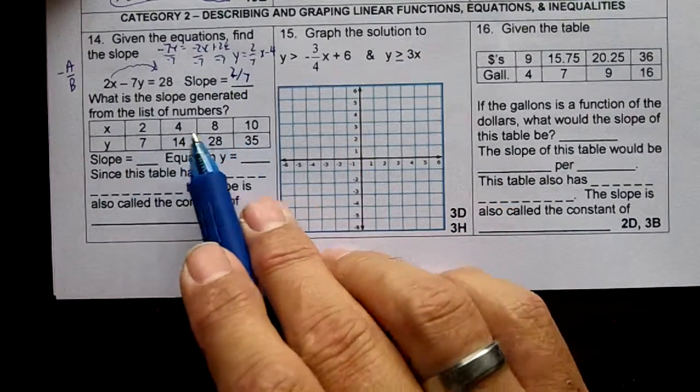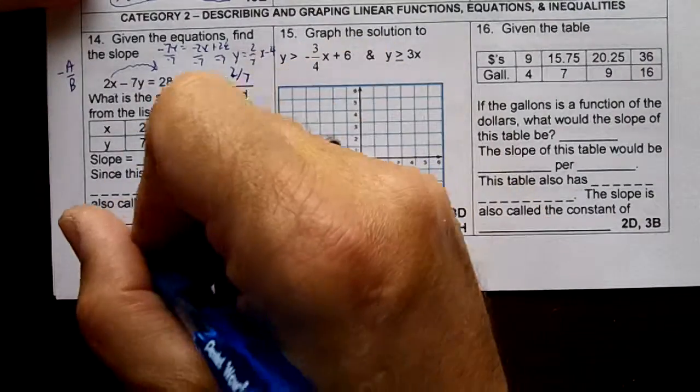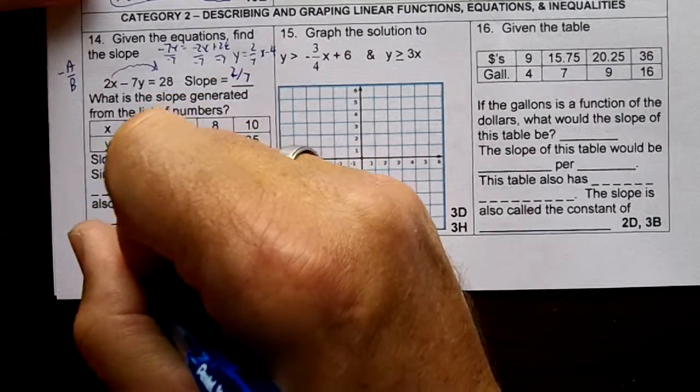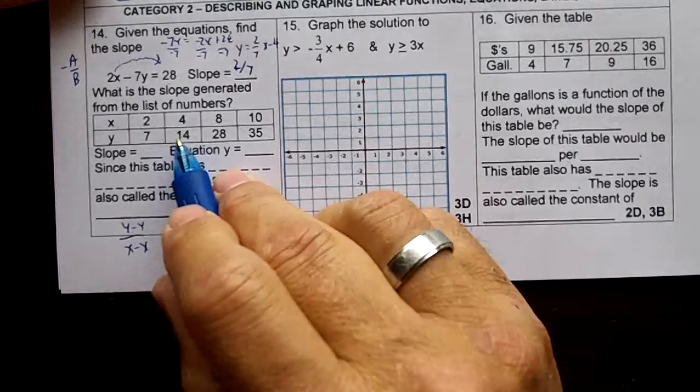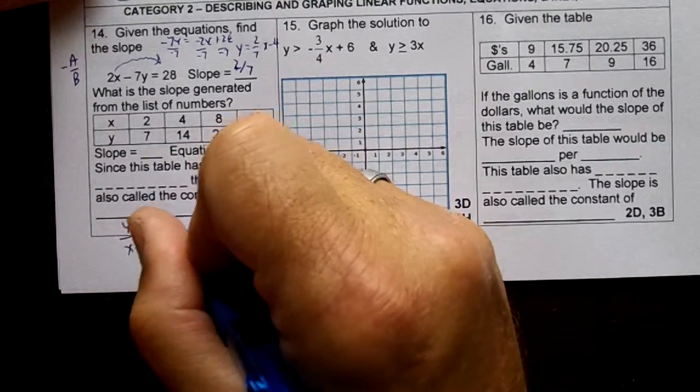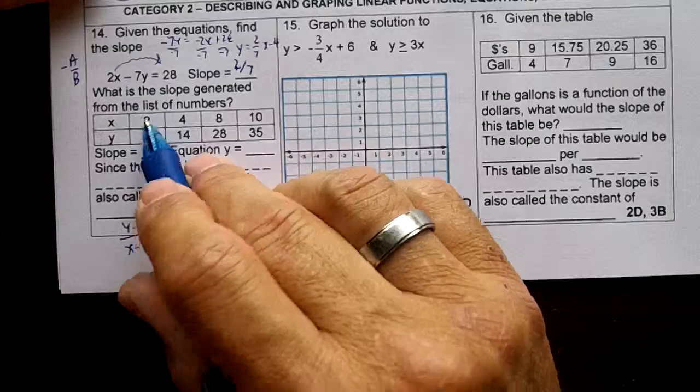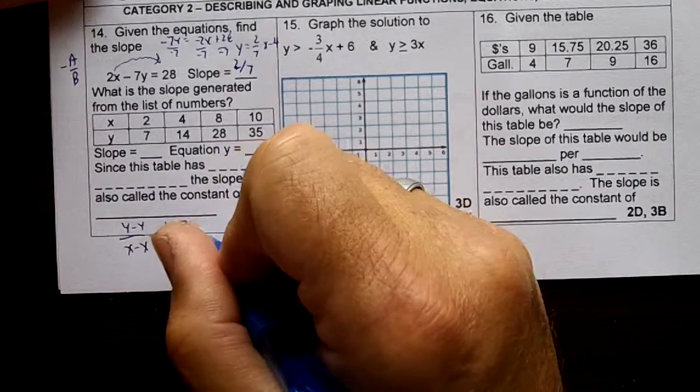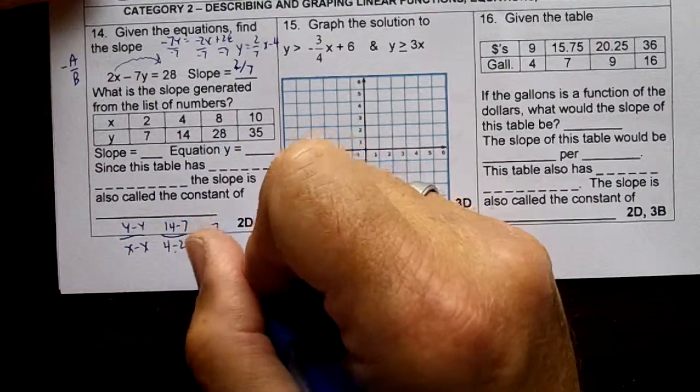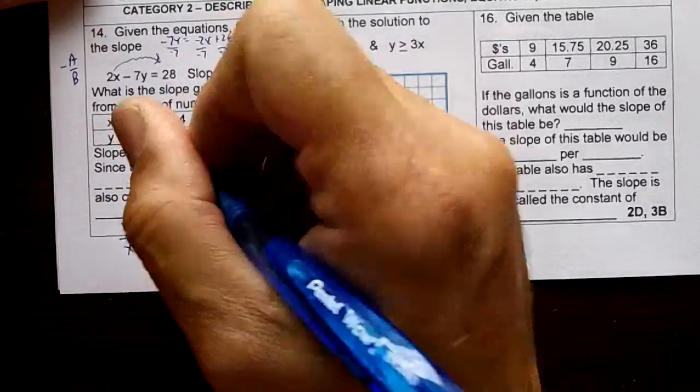Now then we're going to get the slope of this table. So we're going to do y minus y over x minus x. I got 14 minus 7, so I'm going to do 4 minus 2. And I'm going to get 7 over 2. That's my slope.